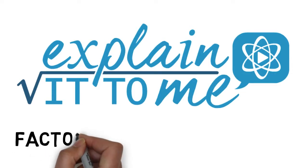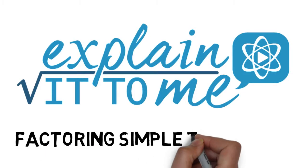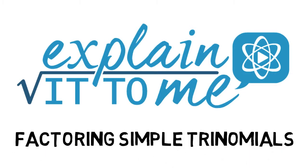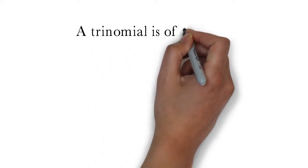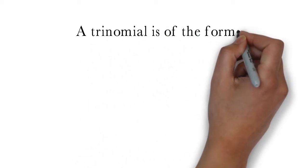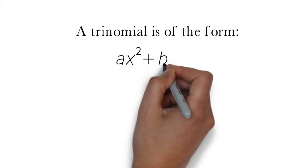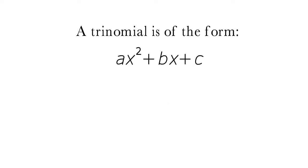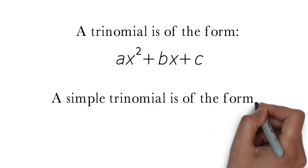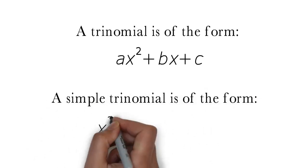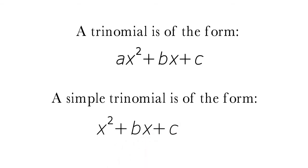In this video we will learn how to factor simple trinomials. A trinomial is a polynomial with three terms, of the form ax squared plus bx plus c. A simple trinomial is specifically of the form x squared plus bx plus c, where a, the coefficient of the first term, is always equal to 1.